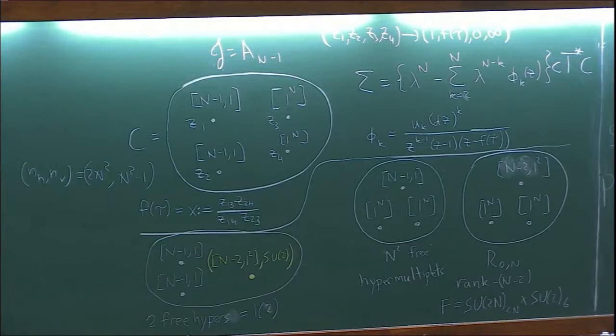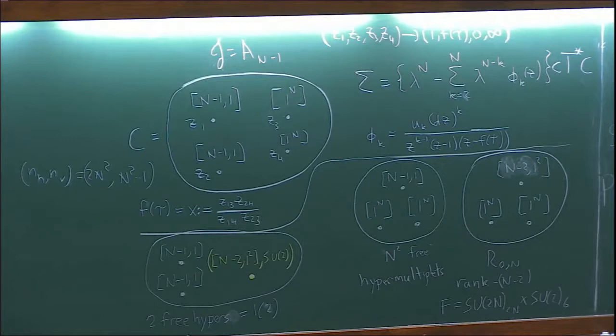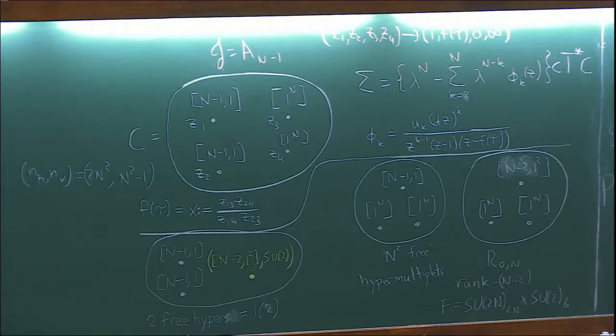The vast majority of theories have no S-duality frame in which they are Lagrangian. In fact, in the E8 case, there is no theory with any genus, any number of punctures, which has any S-duality frame in which it is a Lagrangian field theory. There are gazillions of theories, none of which are Lagrangian field theories. But in the theory which has an S-duality frame where it is a Lagrangian field theory, these numbers are the number of hypers and vectors.